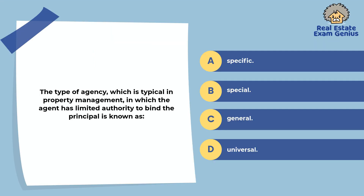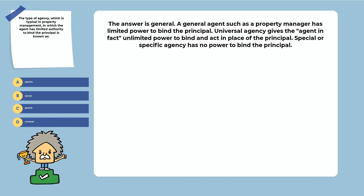The type of agency typical in property management, in which the agent has limited authority to bind the principal, is known as: specific, special, general, or universal. The answer is general. A general agent such as a property manager has limited power to bind the principal. Universal agency gives the agent unlimited power to bind and act in place of the principal. Special or specific agency has no power to bind the principal.